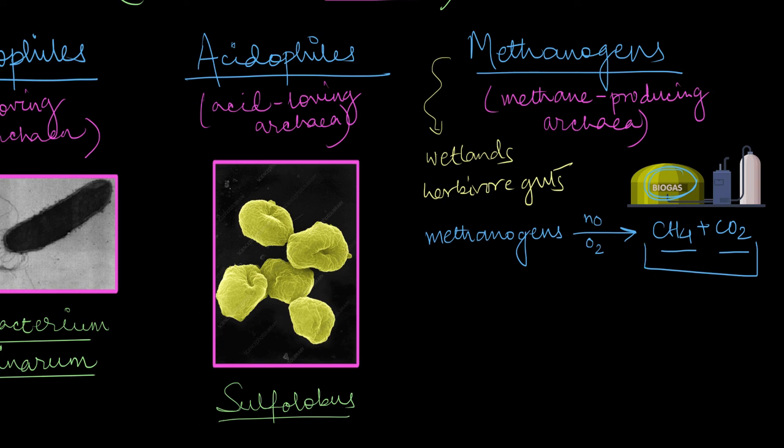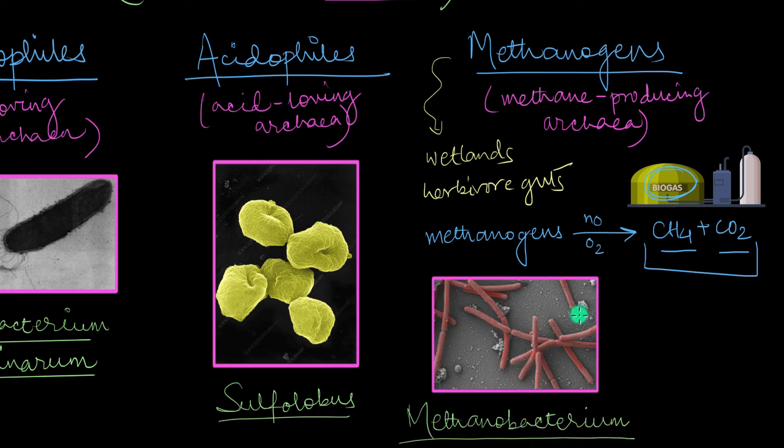An example of a methanogen is methanobacterium, which is also an archaea that is added to organic matter so that we can commercially produce biogas as well.